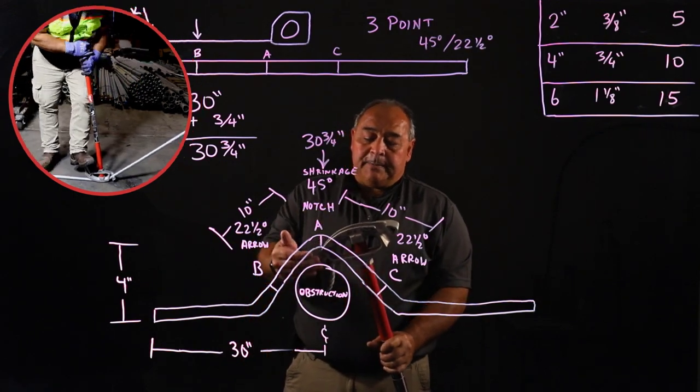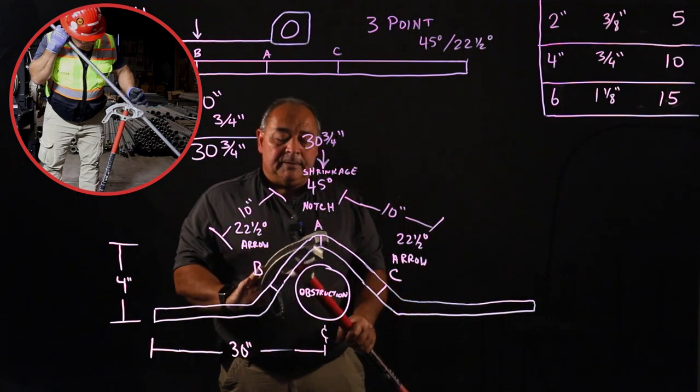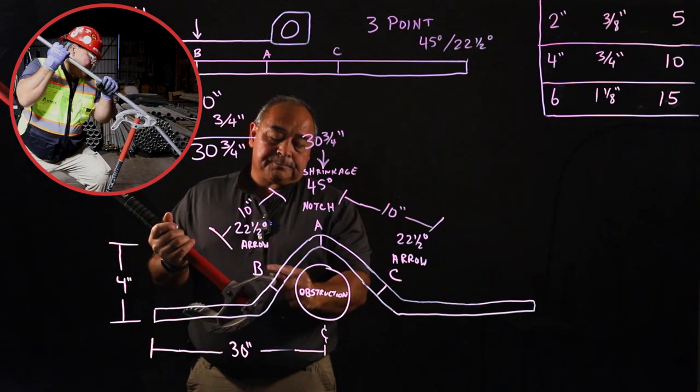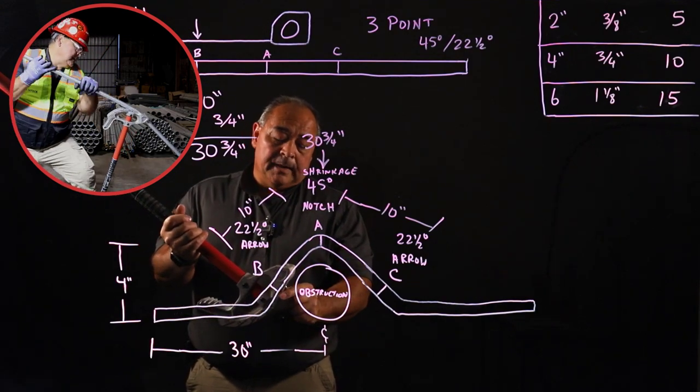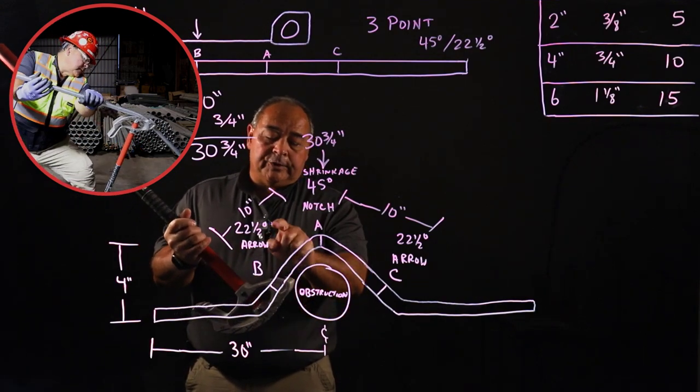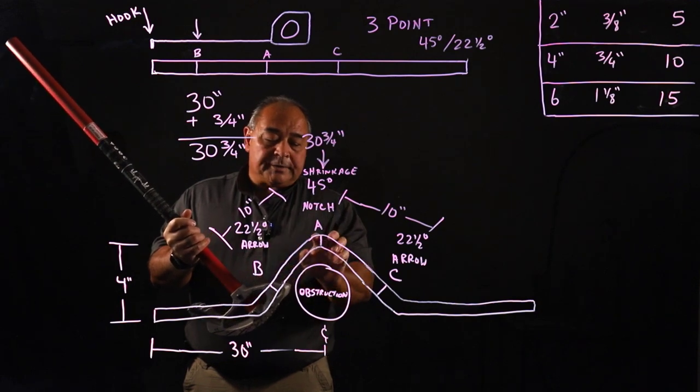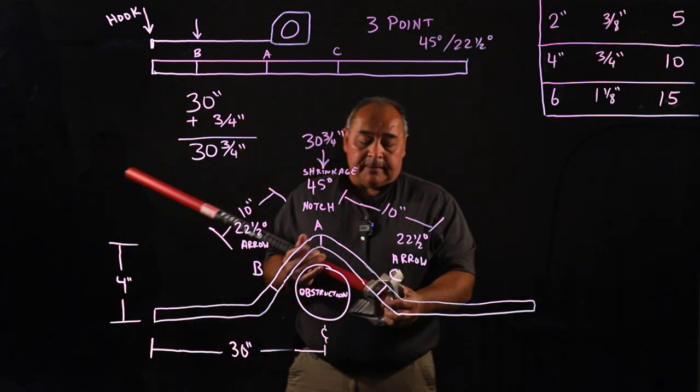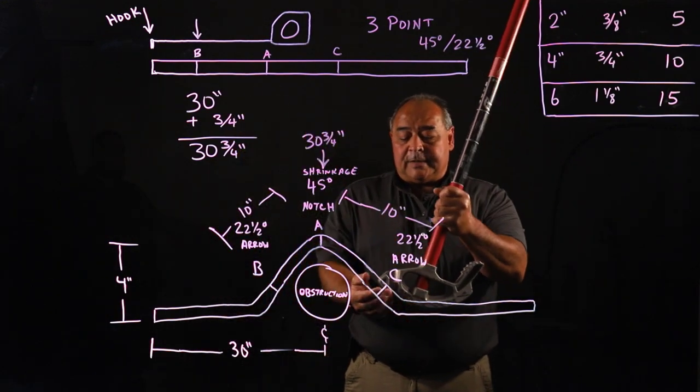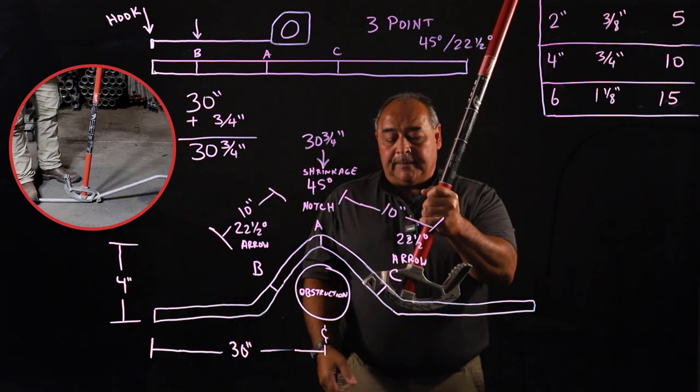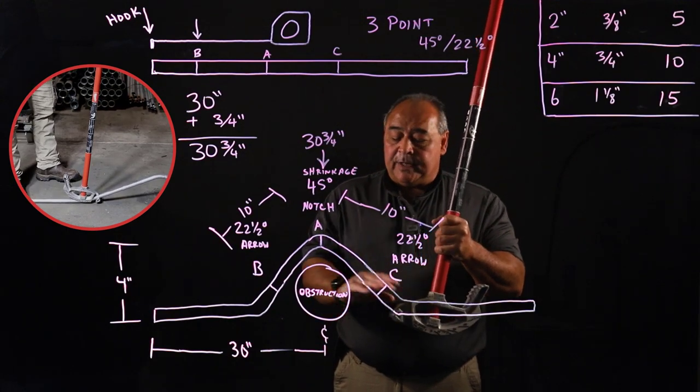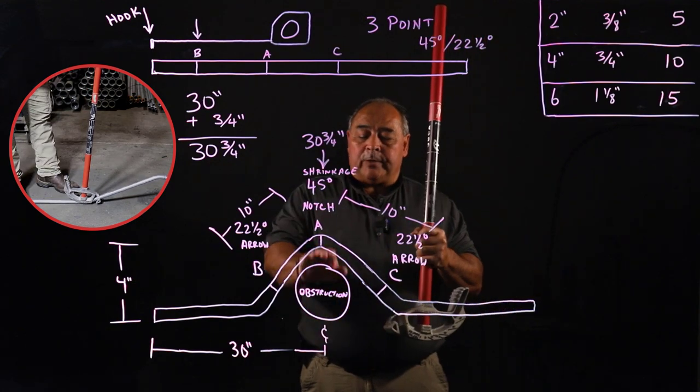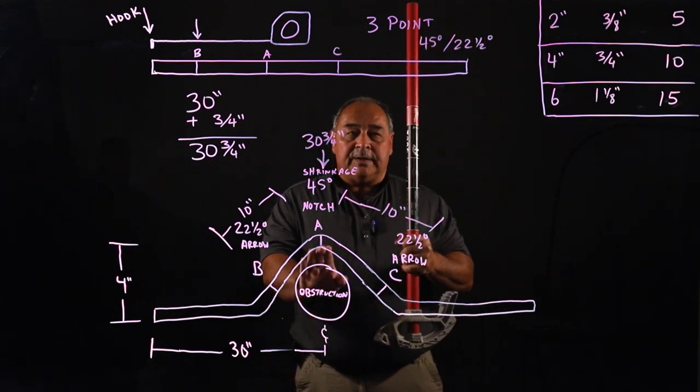Then we spin the pipe, slide it down, and we end up with this orientation of the bender. Now we're going to use the arrow for the B mark. You're going to bend this B mark at 22 and a half degrees, which is half the degrees of the A mark. Then you're going to take the pipe out, put it in the other side, put the arrow on the C mark, and bend it to 22 and a half degrees. And this should be a flat plane from here to here with a raise of four inches in the center.